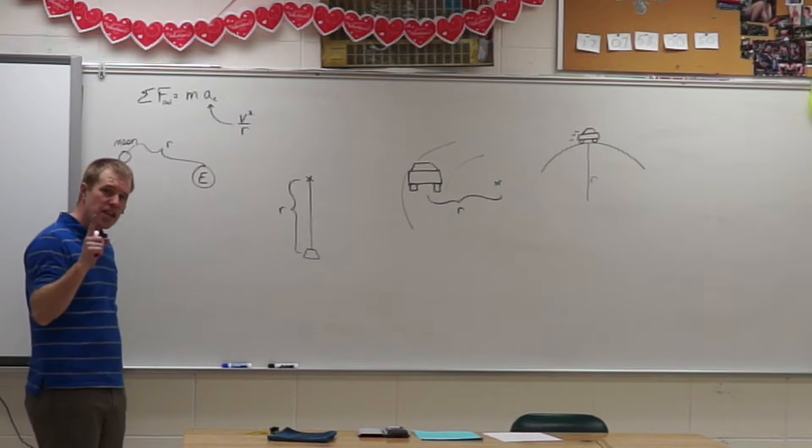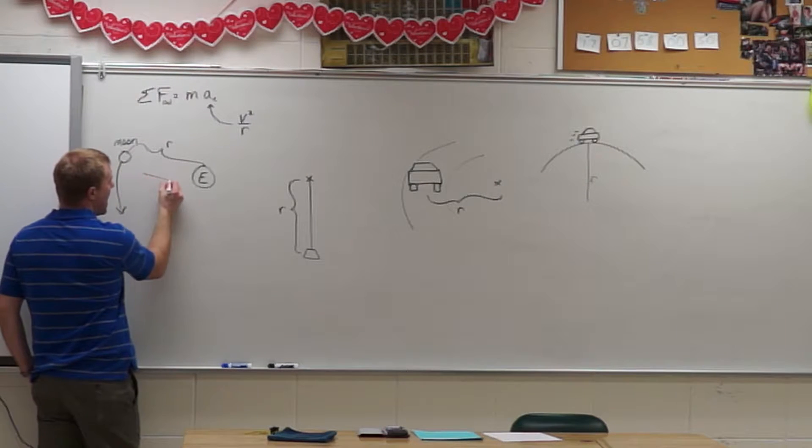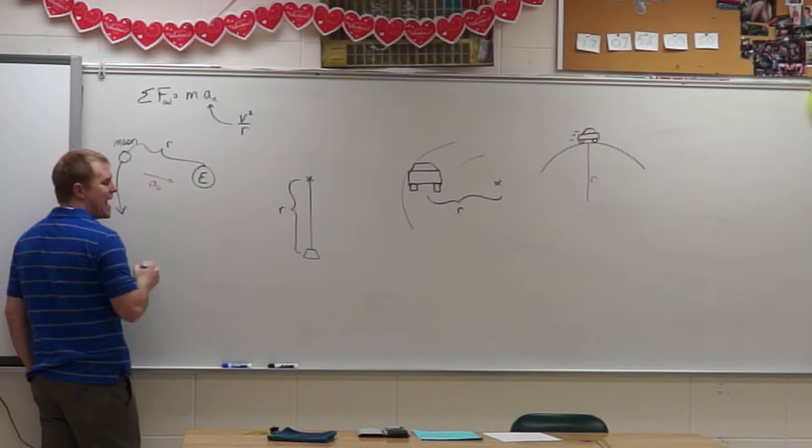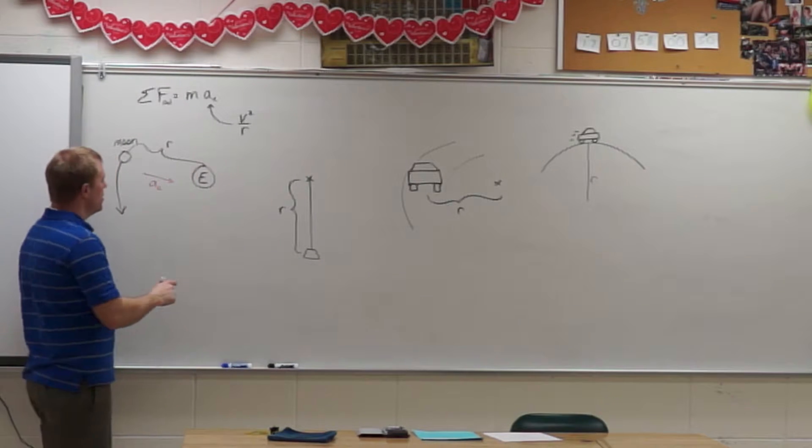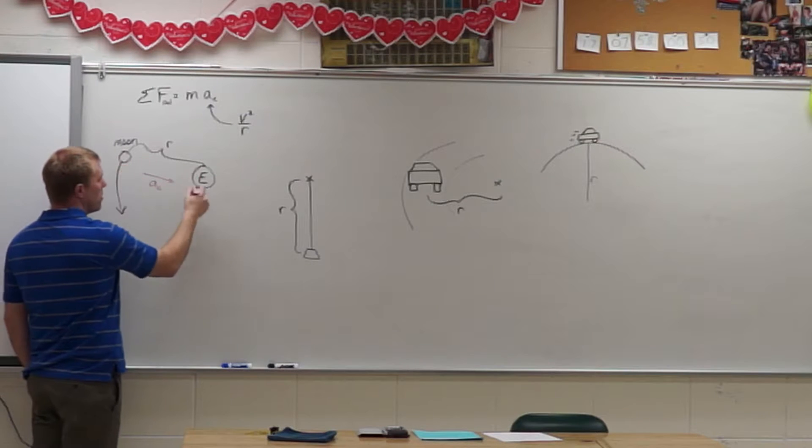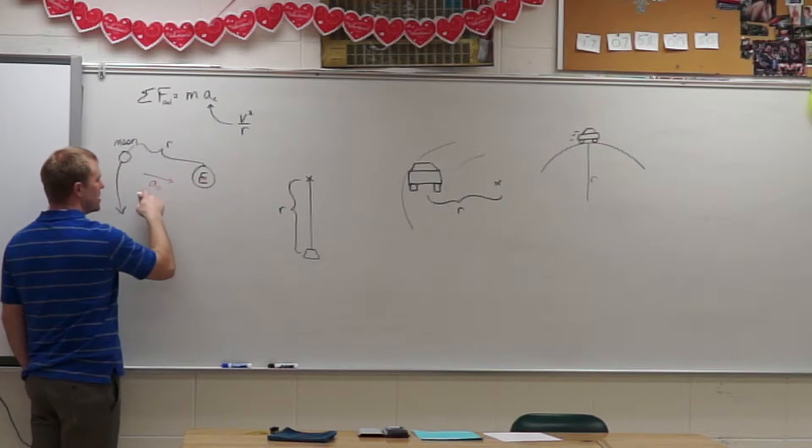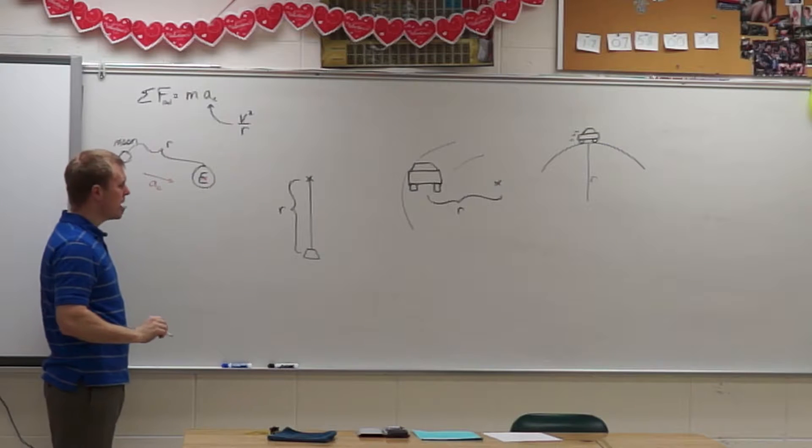The first thing you do when you have one of these problems is you draw Ac, and Ac always points radially inward. So for the moon, from the moon to the earth, because that's where my axis of rotation is, radially inward is the direction for Ac.